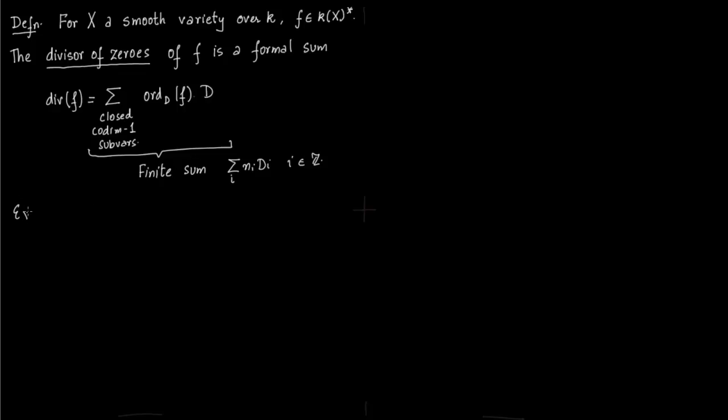This will be more clear in an example. Say you are working in kP^1 and you want to find divisor of this function: (x+2)(x-7) divided by (x-3)^4. First we need to notice that the degree of numerator has to be equal to the degree of denominator. But degree of denominator is 4, so we need to add infinity to the numerator.